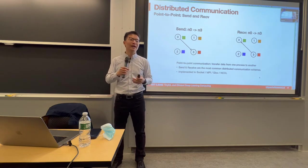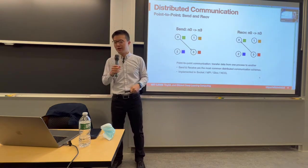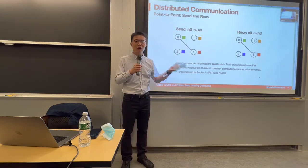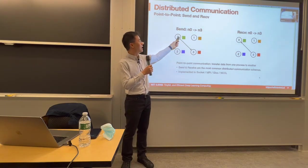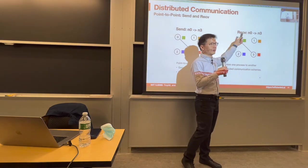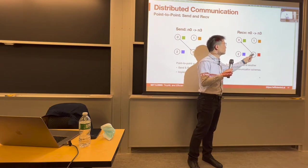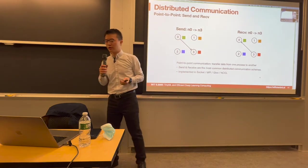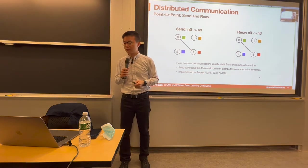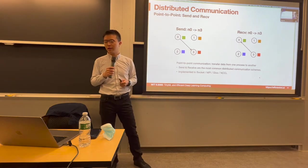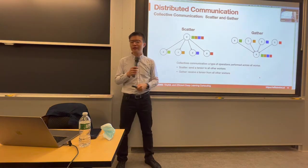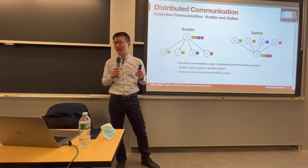Let's introduce several communication primitives — the fundamental operations. Point-to-point communication is the simplest: one node sends to another, like node zero sending to node three, and node three receiving from node zero. This is implemented in MPI and many frameworks as a basic primitive.